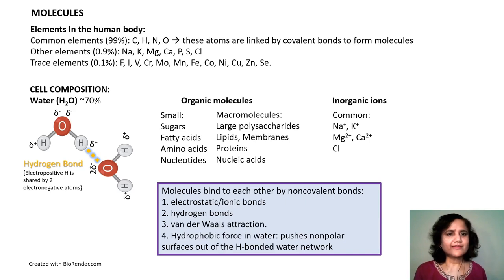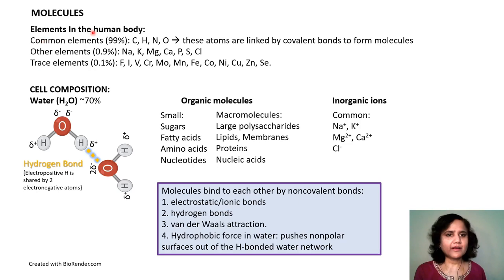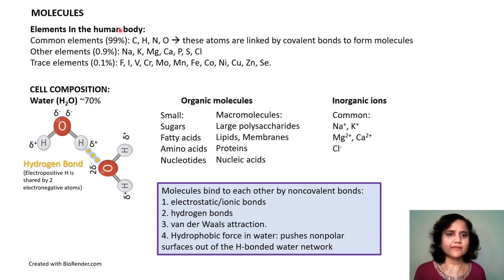Living systems only have a subset of elements. In the human body, the major molecule present is water, but among the elements the most common are carbon, hydrogen, nitrogen, and oxygen. These are often linked by covalent bonds to form molecules. There are other elements in smaller quantities such as ions — sodium, potassium, magnesium, calcium — and various trace elements present in very small quantities.